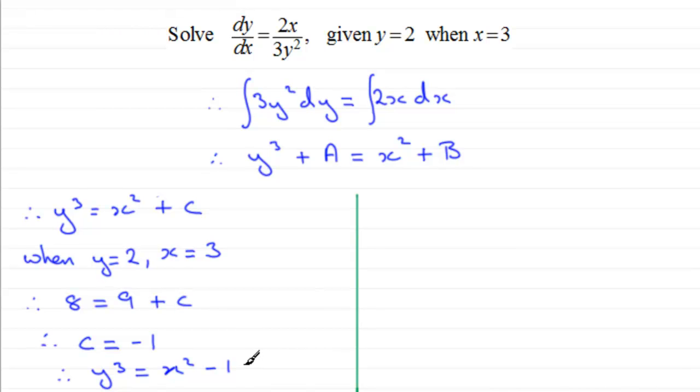All right. Now, suppose we had decided that instead of putting the C on the right hand side here, that we had integrated this term here, got y cubed, and we've decided to put the constant C on the left hand side. And we've got equals x squared.